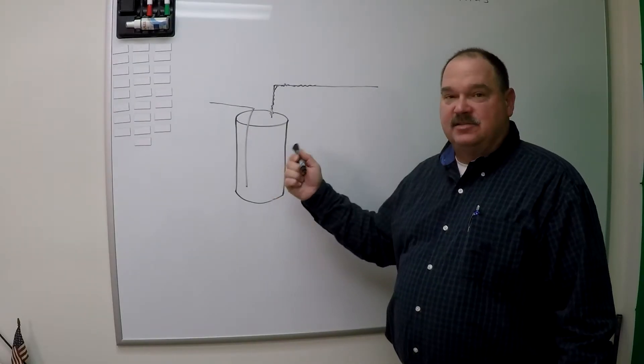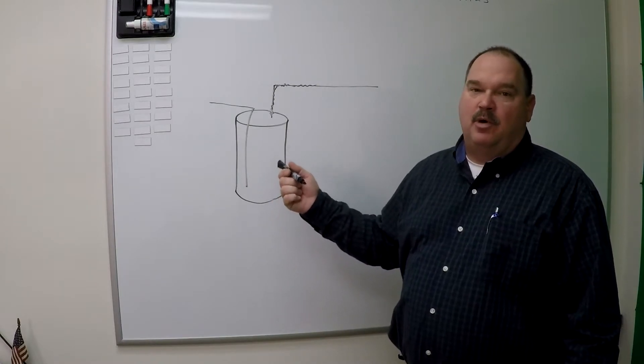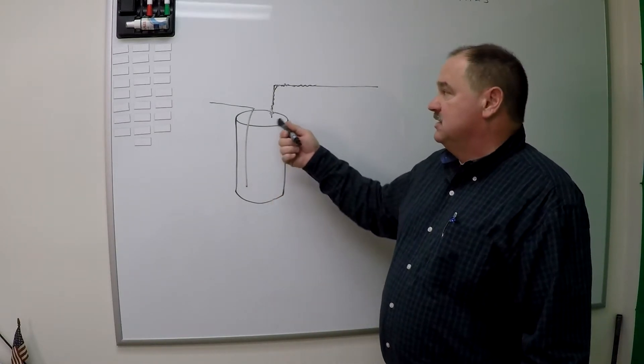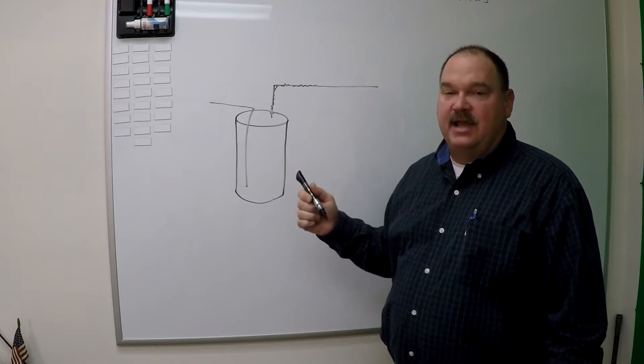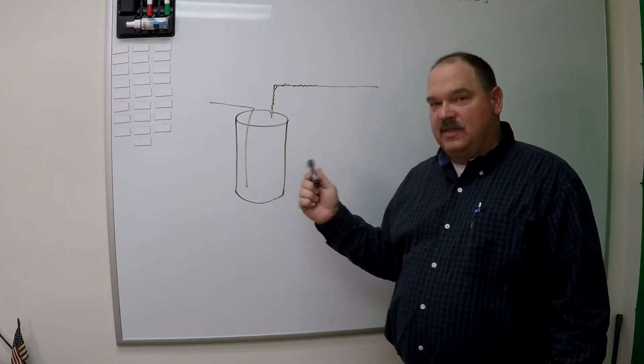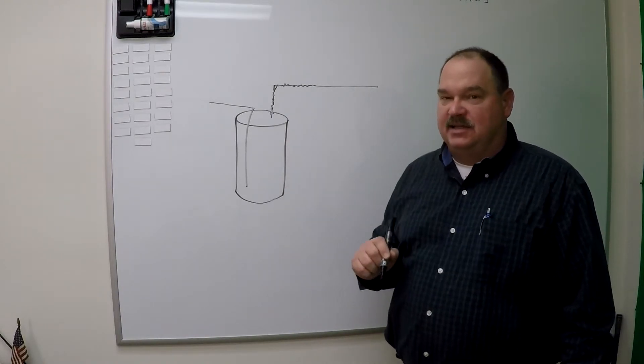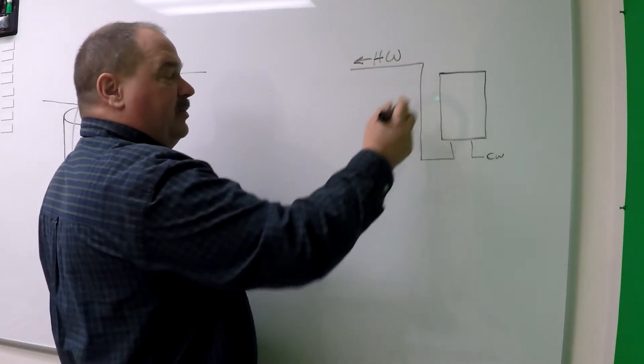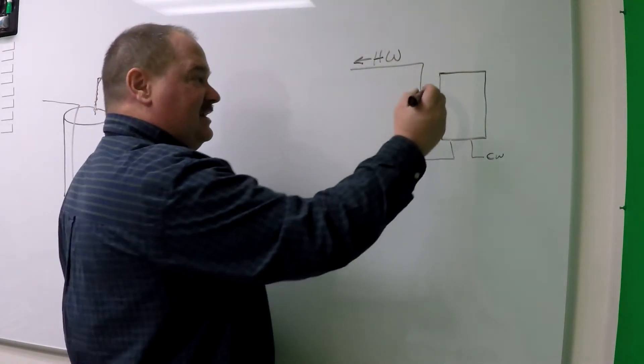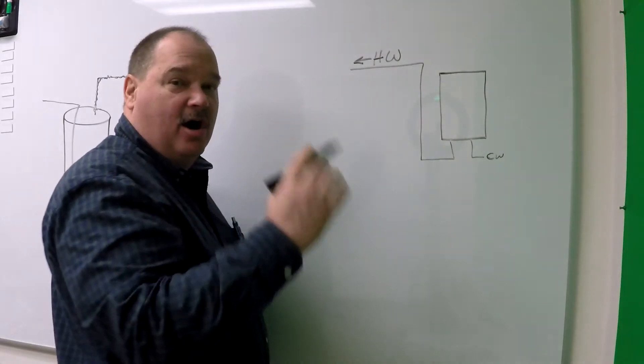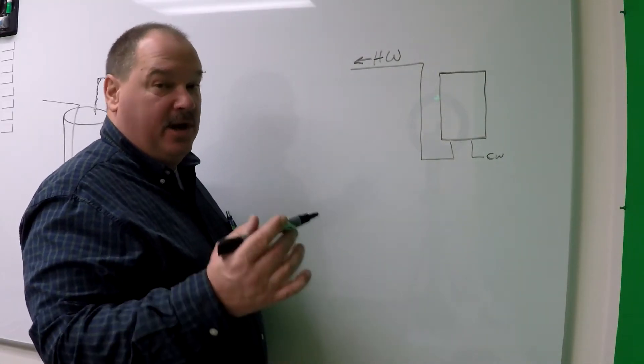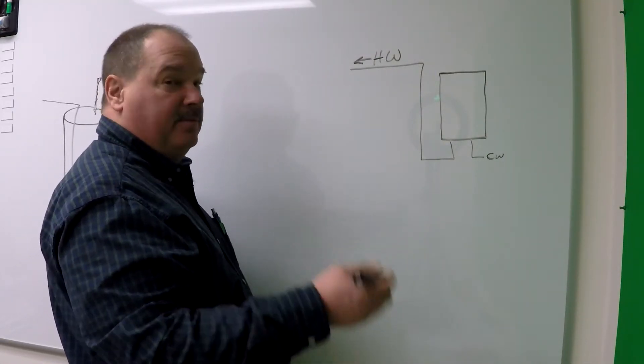Now remember, this tank's always on. It's always keeping hot water hot. It has standby heat losses and standby losses in the piping connected to it. But when you get rid of that tank and put a tankless in, all of this hot water pipe is now going to cool off because this machine is always off. This saves you energy, but it may actually make your lag time problem a little worse.